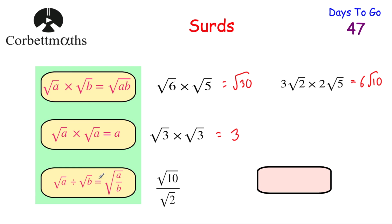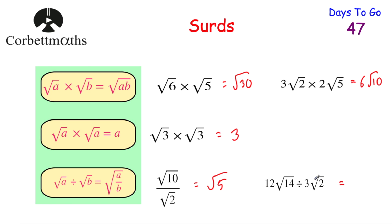Now let's have a look at our rule for dividing surds. If we had root A divided by root B, we'd just divide the numbers, so we'd have the root of A over B. So if we had root 10 divided by root 2, well 10 divided by 2 is 5, so that'd be equal to root 5. That also works with numbers in front of surds. So if we had 12 root 14 divided by 3 root 2, we'd do 12 divided by 3 which is 4, and root 14 divided by root 2 is root 7 because 14 divided by 2 is 7. So the answer would be 4 root 7.